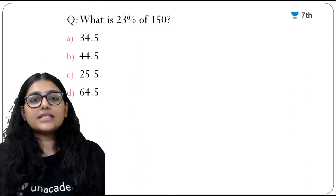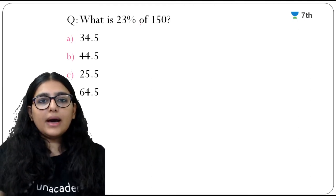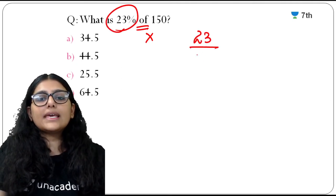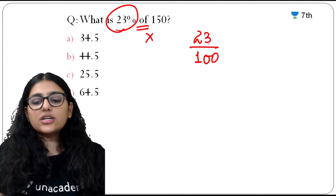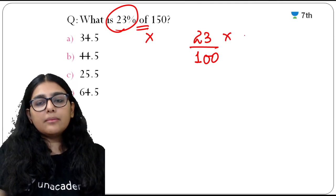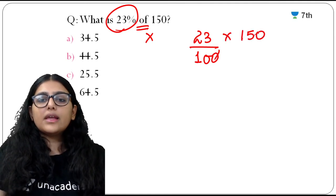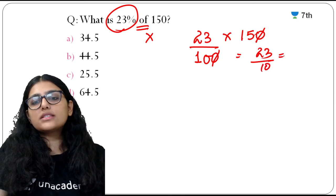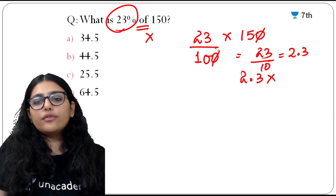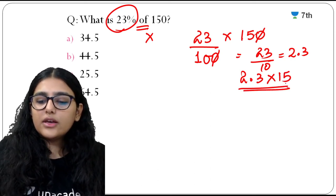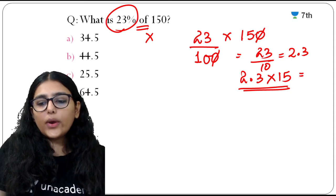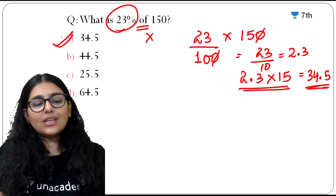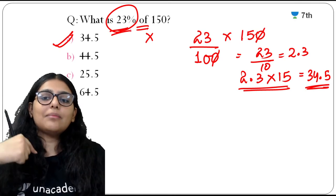What is 23% of 150? 'Of' means multiplication. 23% written as a fraction is 23/100. So 23% of 150 = (23/100) × 150 = 23/10 × 15 = 2.3 × 15 = 34.5.